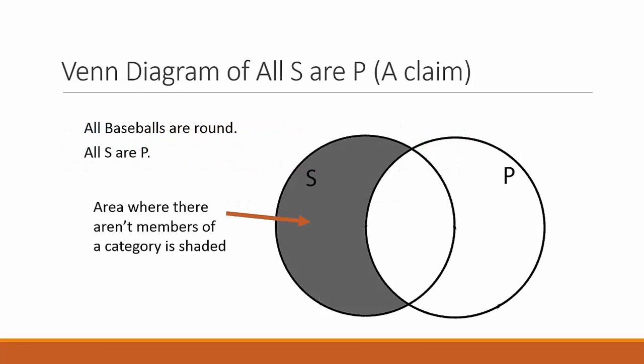Venn diagrams provide a way to visualize logical relationships between the subject and predicate in a categorical claim. Two circles are drawn that overlap, the left circle representing the subject, and the right circle representing the predicate in the categorical claim.